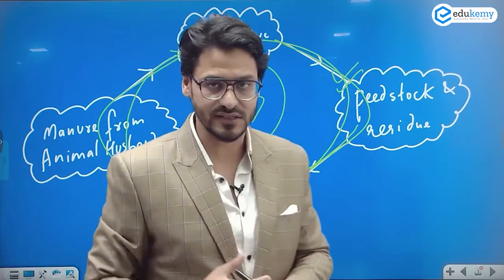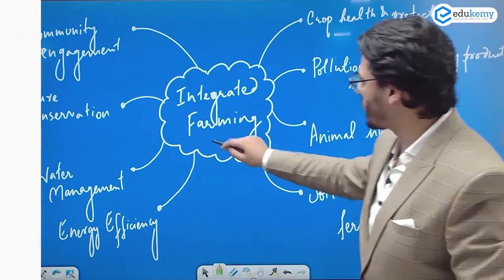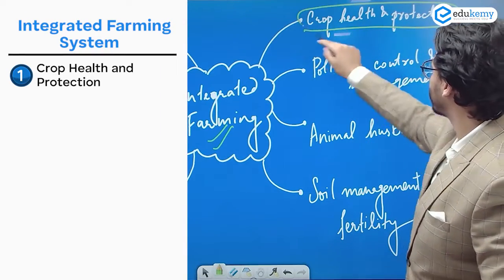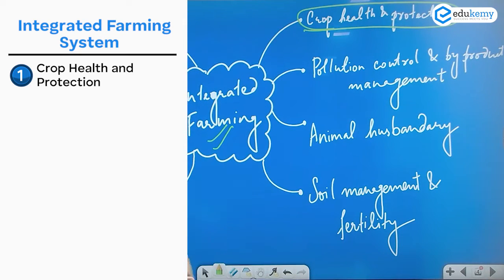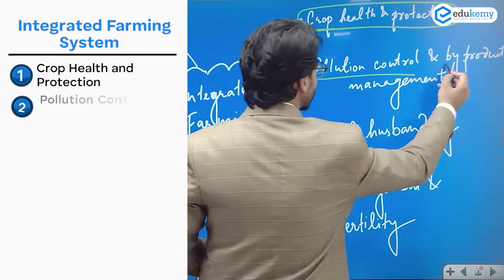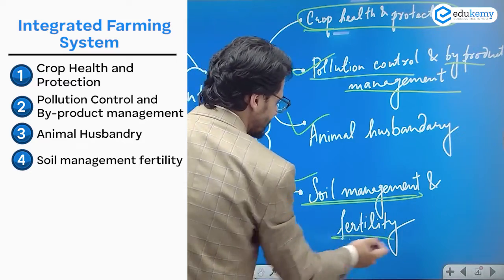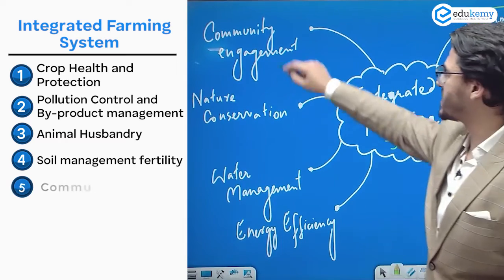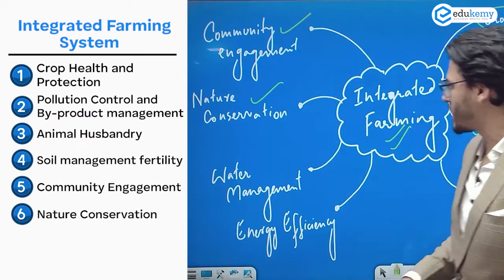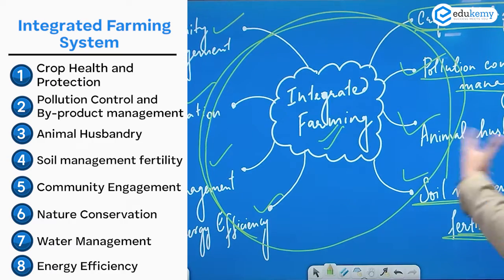Multiple farming systems can be integrated together. The dimensions of integrated farming include crop health and soil protection, pollution control, by-product management, soil management and fertility, community engagement, nature conservation, water management, and energy efficiency. You can create a diagram of these dimensions in your answer.